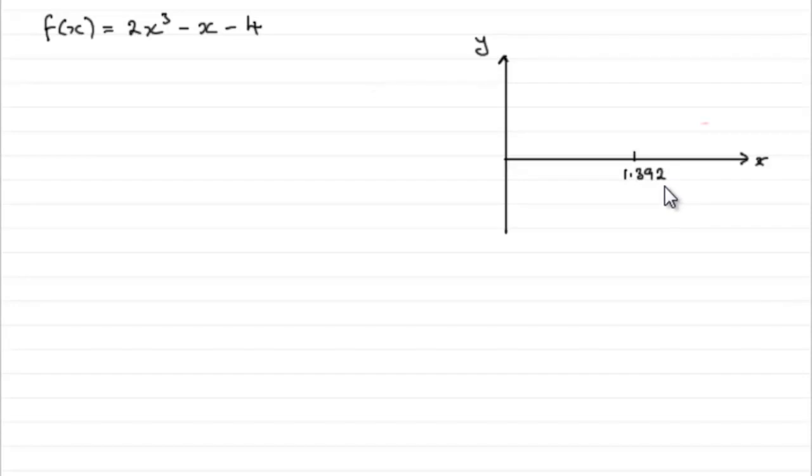In other words, what we're expecting is that if we were to draw this graph, there'll be a change of sign somewhere around the 1.392 value. A change of sign being that the graph has gone from say minus to positive or from positive to a minus quantity.